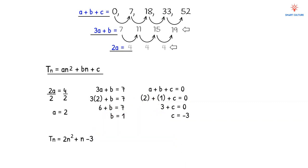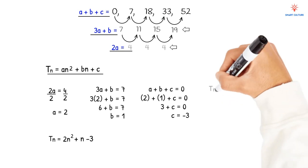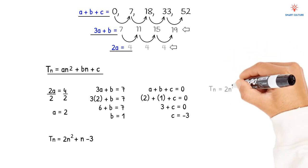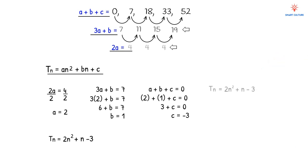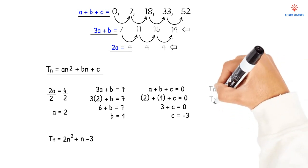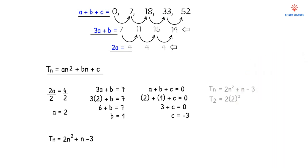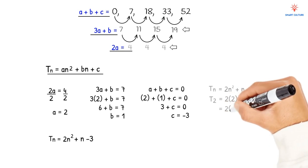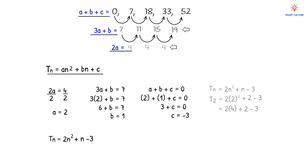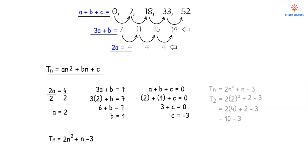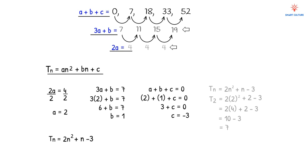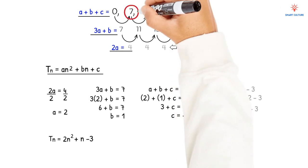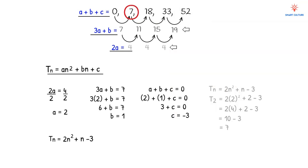Let's test this rule to verify it's correct. We know the second term is 7, so we substitute n = 2: 2(2²) + 2 − 3 = 2(4) + 2 − 3 = 8 + 2 − 3 = 10 − 3 = 7. The second term is indeed 7, confirming the rule is correct.